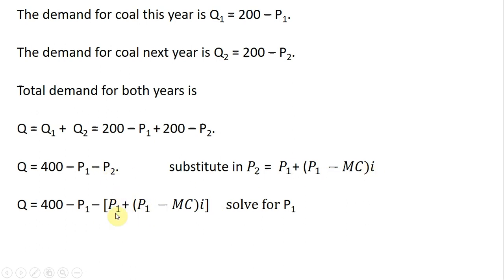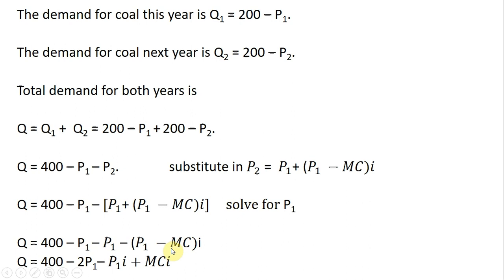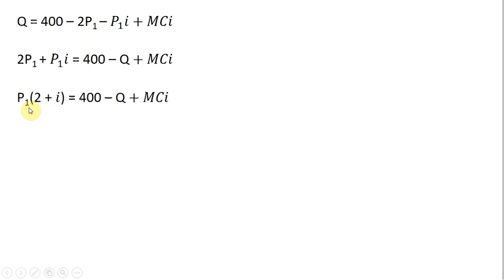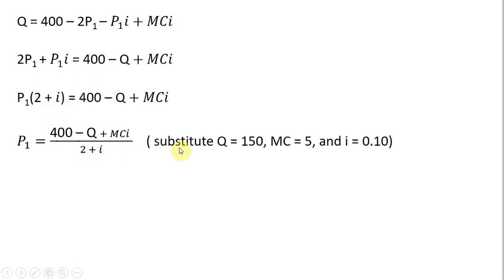Plugging in the expression for P subscript 2 into the total demand equation, we aim to solve for P subscript 1. First, distributing the minus sign, then simplifying by distributing through the parentheses, we move terms around: 2P subscript 1 minus P subscript 1 times I. Factoring out P subscript 1 on the left-hand side, then dividing through by what's in parentheses, we get an expression for P subscript 1.